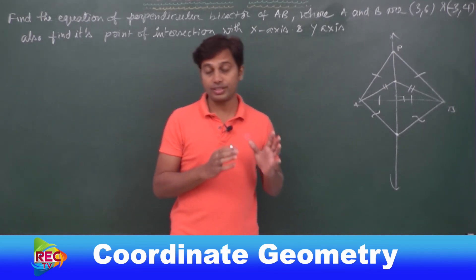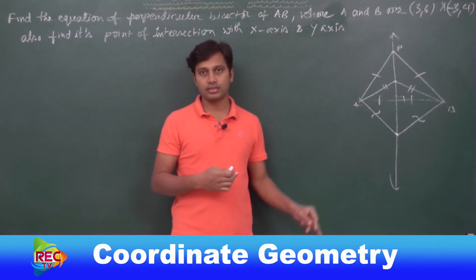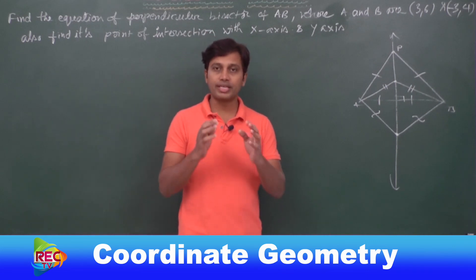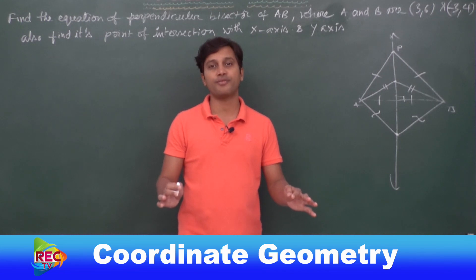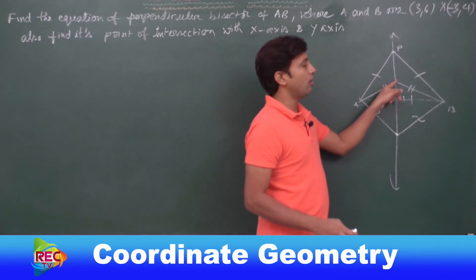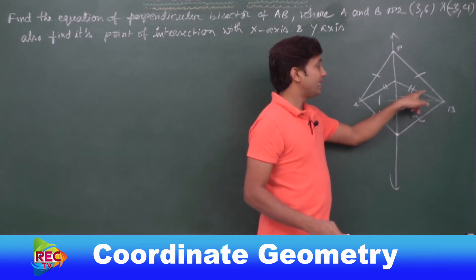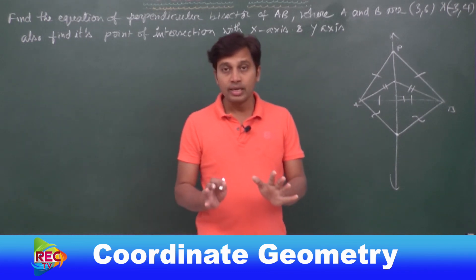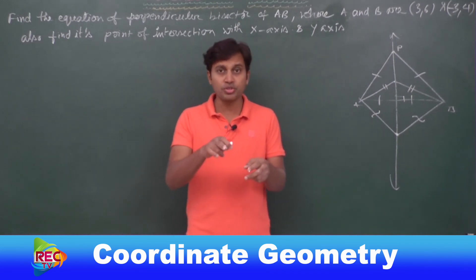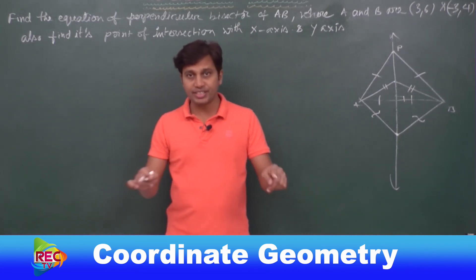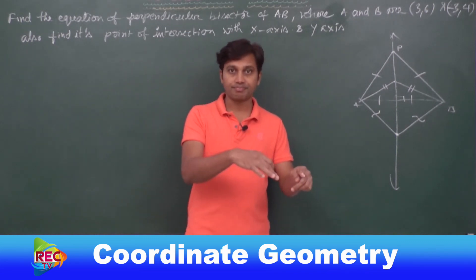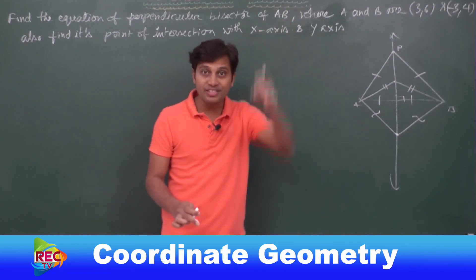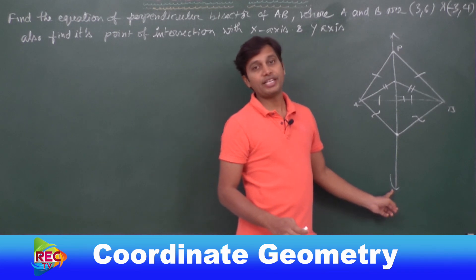This is a standard property from plane geometry that you might have learned in ninth standard. Any point on the perpendicular bisector of the given line segment is equidistant from the endpoints of that line segment. Conversely, any point equidistant from the endpoints of a line segment lies on the perpendicular bisector.